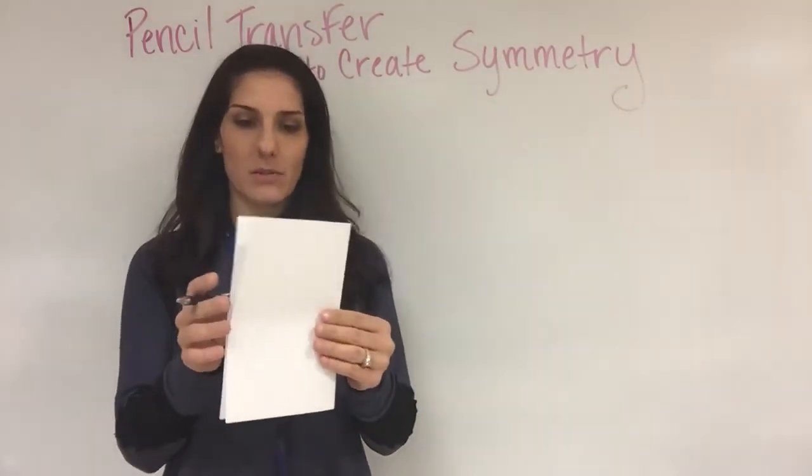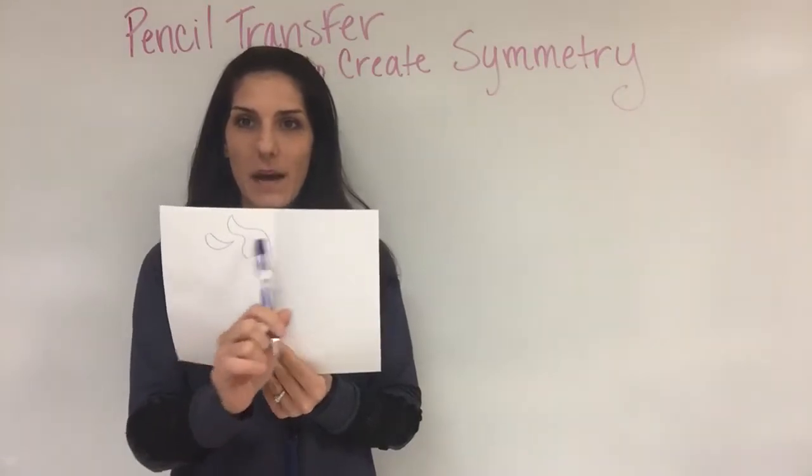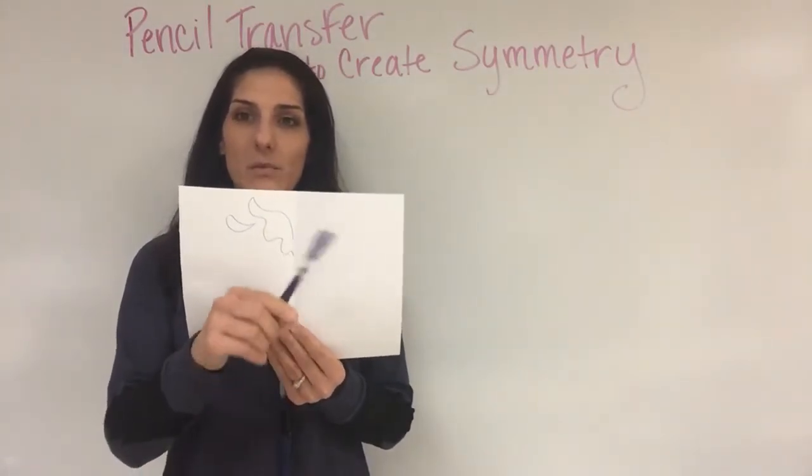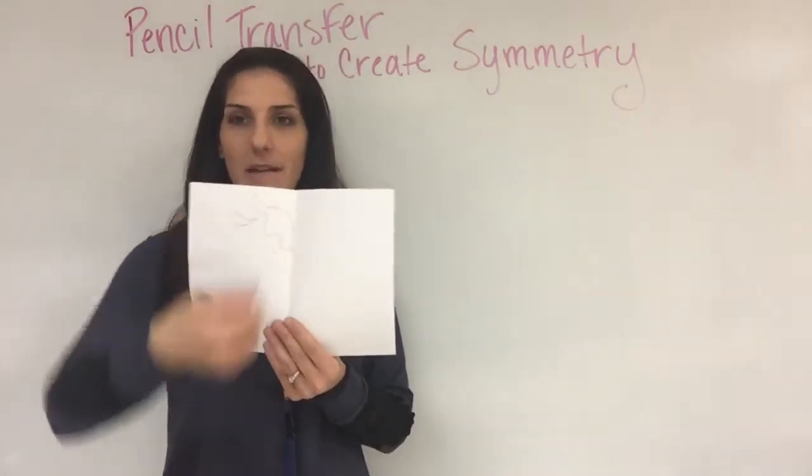Bilateral symmetry has two side-by-side designs. Quadrilateral has four designs in each corner, all the same. Radial symmetry is when the design rotates around like the hands of a clock, all being the same, pointing towards the center.